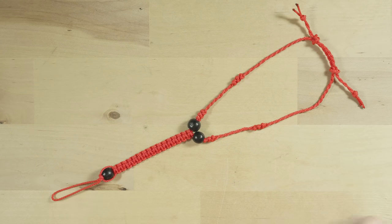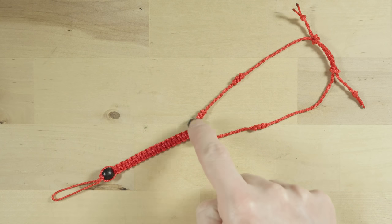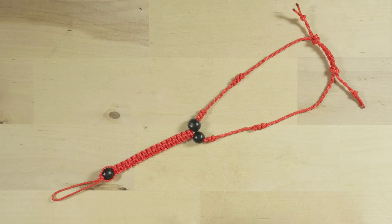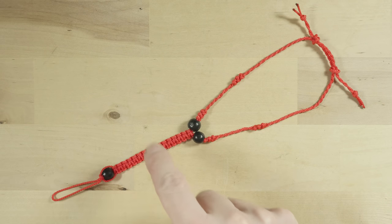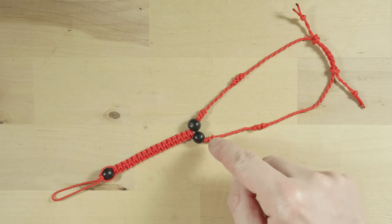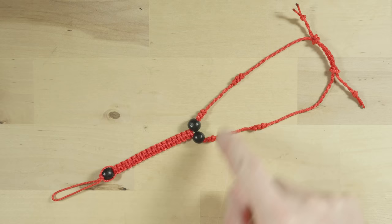This design begins with a loop which hooks onto one finger on the foot, usually the middle finger. Then we have a couple of beads. We have a series of square knots, also referred to as cobra knots. We have a couple of snake knots.